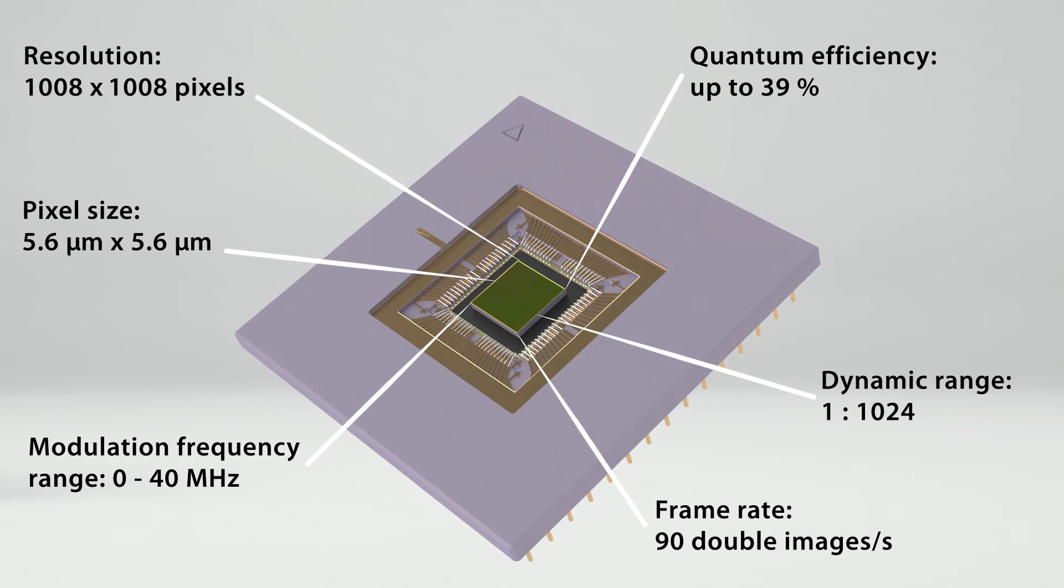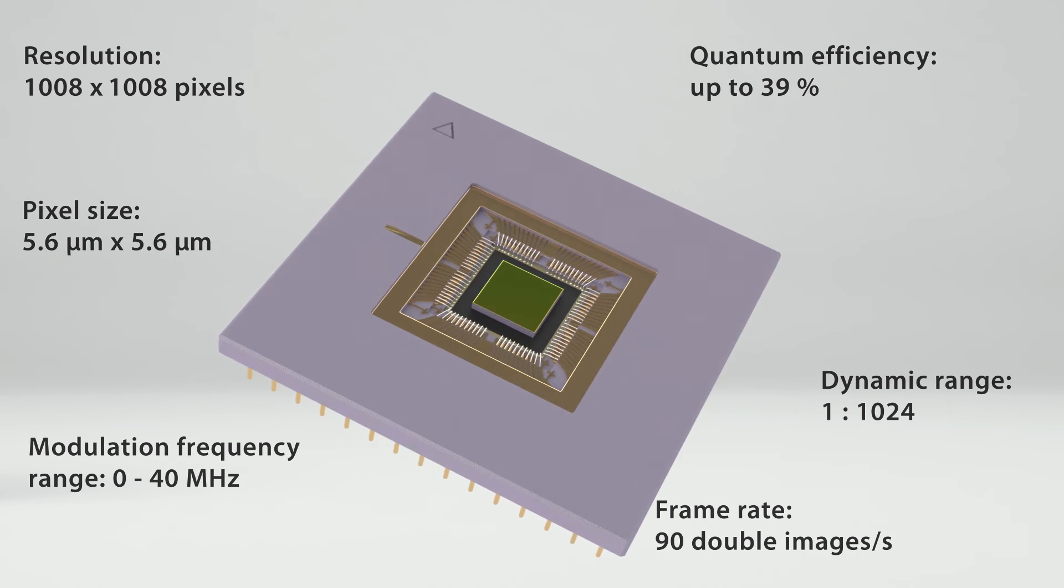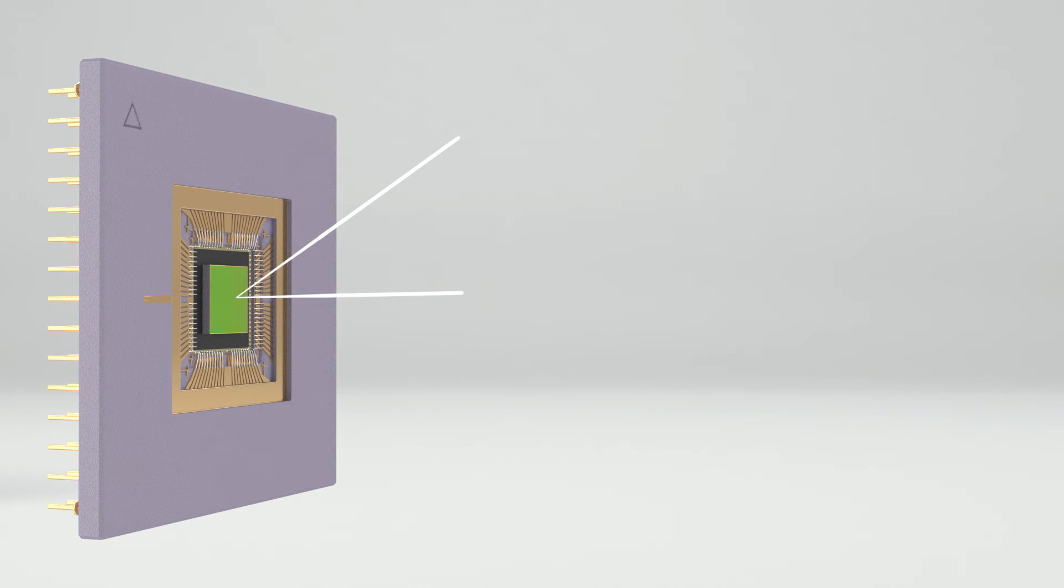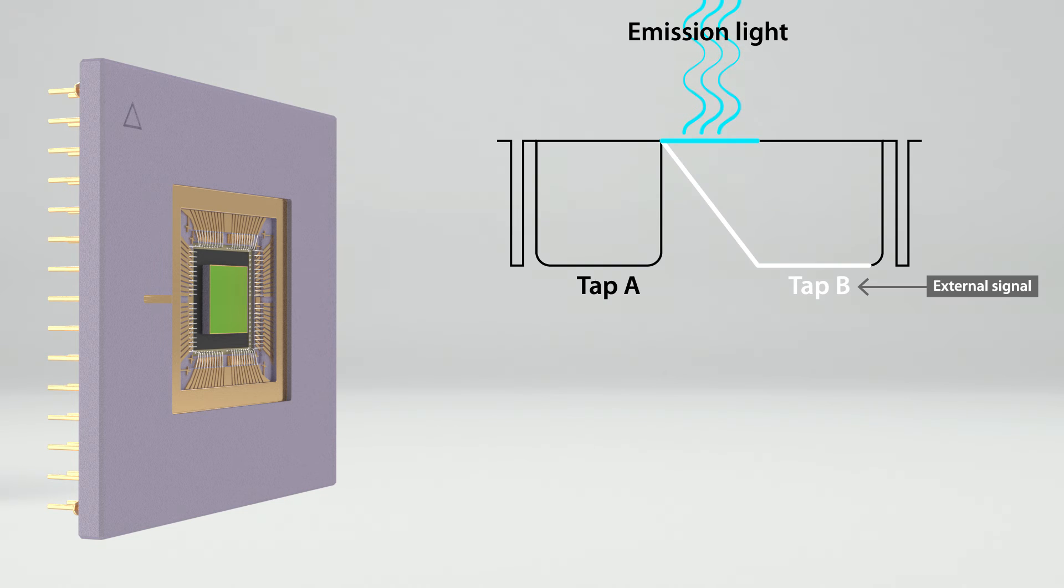It was developed by CSAM and PCO from 2007 to 2012. In this unique image sensor, each of the 1008x1008 pixels has two charge collection areas, tap A and tap B. An externally applied two-level modulation signal controls whether the generated charge carriers pass through tap A or tap B.